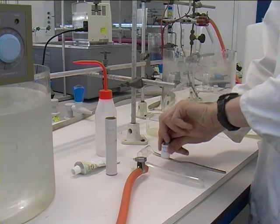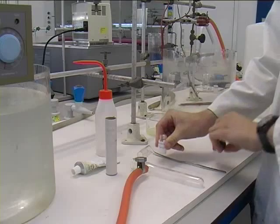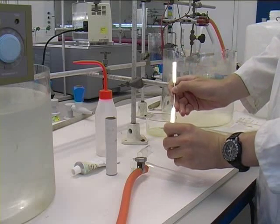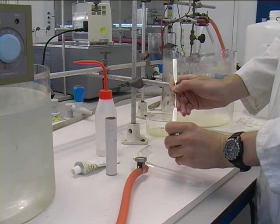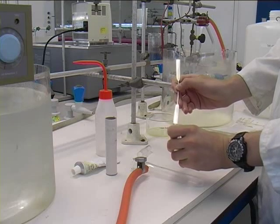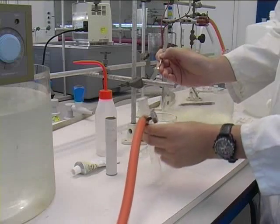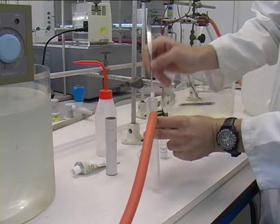The apparatus is set up by putting antibumping granules, ethanol, and a capillary into a boiling tube with a sidearm which is connected to the rest of the rig. The capillary is open at one end, and when placed in the boiling tube, the open end must be bottom most.